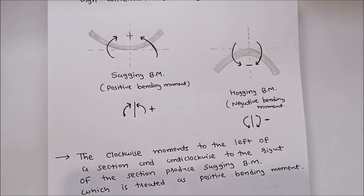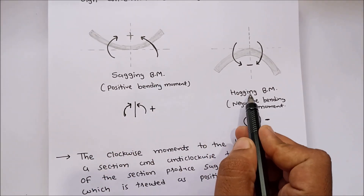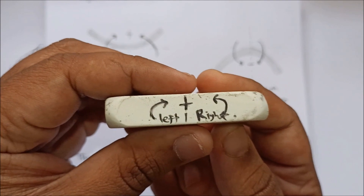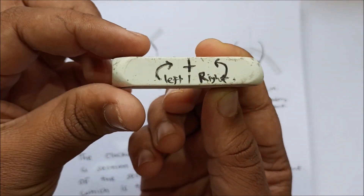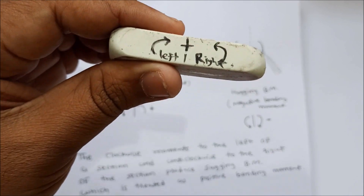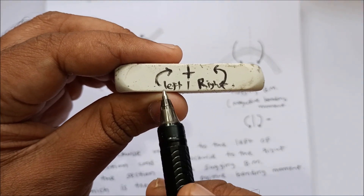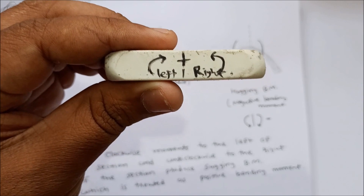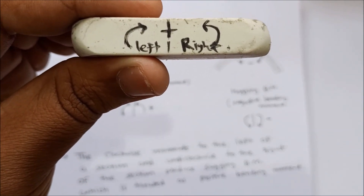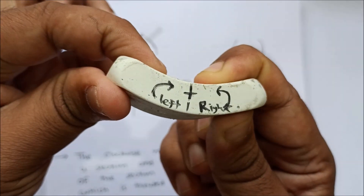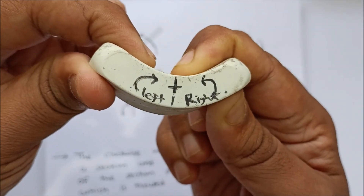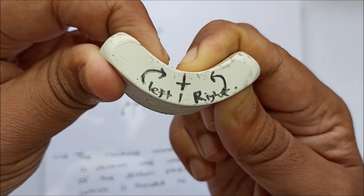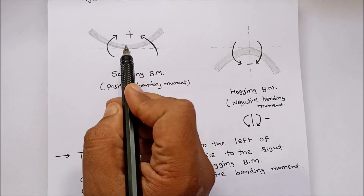First we discuss what is the meaning of sagging bending moment and what is the meaning of hogging bending moment. In sagging bending moment, the clockwise moment to the left of a section and anticlockwise moment to the right of the section produce sagging bending moment, which is treated as positive bending moment.